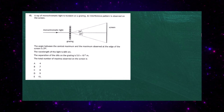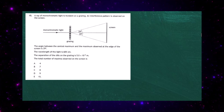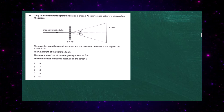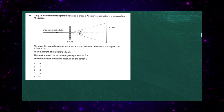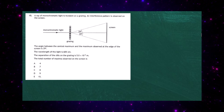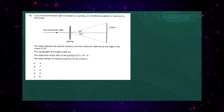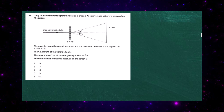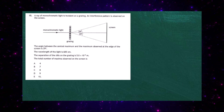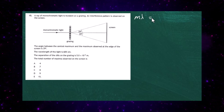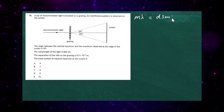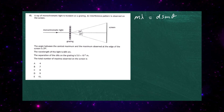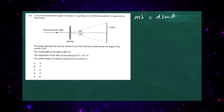Question 15 from the 2023 Higher Physics examination, Paper 1. A ray of monochromatic light is incident on a grating and an interference pattern is observed on a screen. The angle between the central maximum and the maximum at the edge of the screen is 29°. The wavelength is 605 nm and the slit separation is 5.0 × 10⁻⁶ m. We need to find the total number of maxima observed on the screen, starting with the diffraction grating equation: mλ = d sinθ.